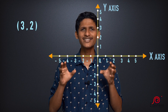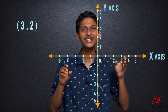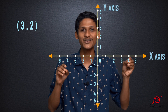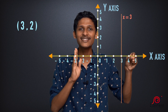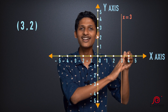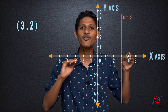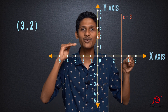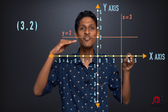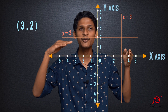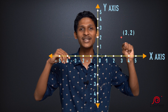Now we are going to plot a Cartesian coordinate. Let's say there is a point where the x value is 3. If x value is 3, we move 3 units along the x-axis. Now for y value 2, we go 2 units above the x-axis. So y equals 2. The point is at x value 3, y value 2 — that is the point (3, 2).